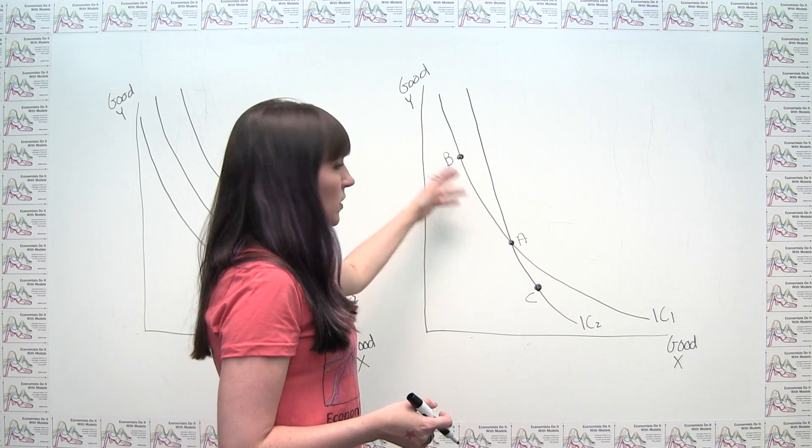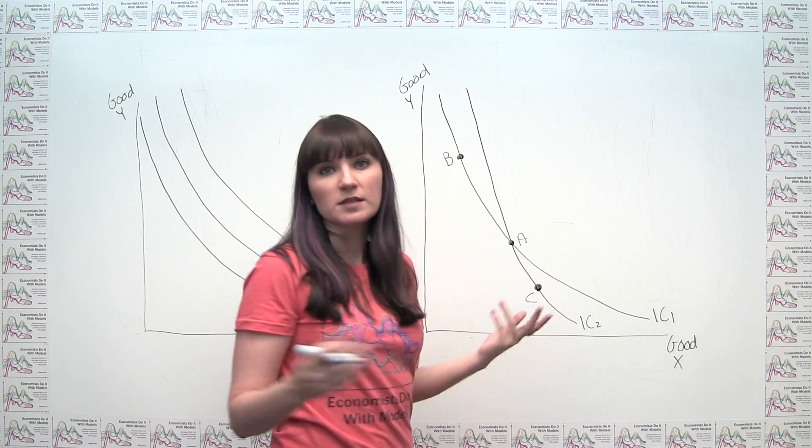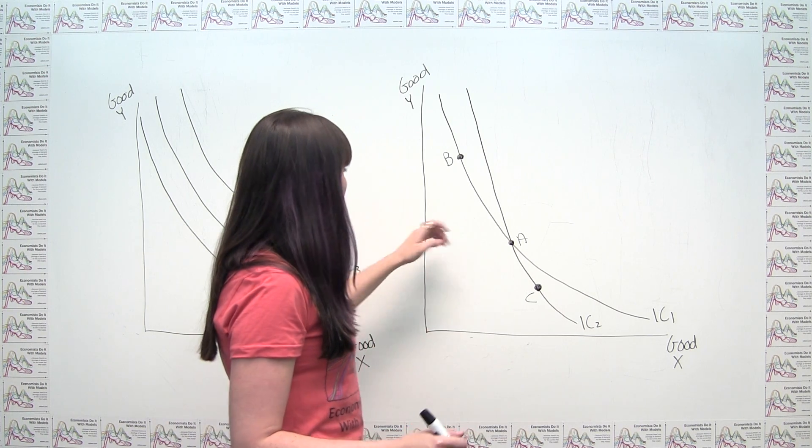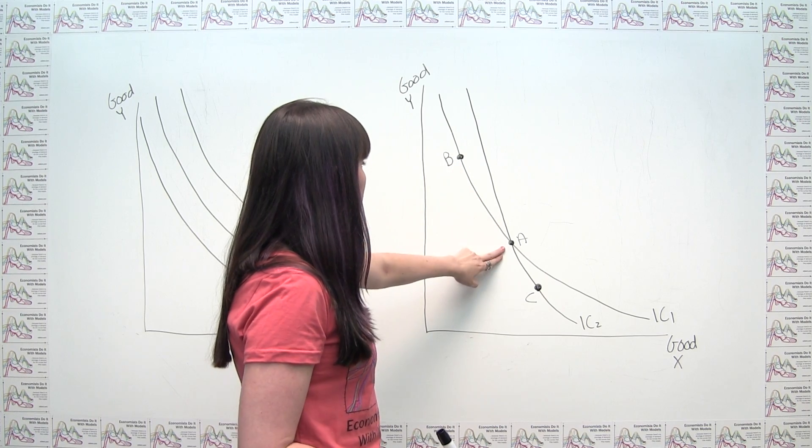So, in other words, in very simple terms, the consumer has to be indifferent between any two points on the same indifference curve. So what that means is that by definition, we can look at A and B.